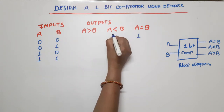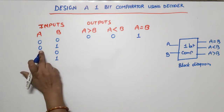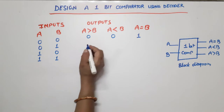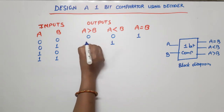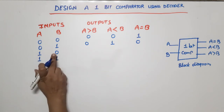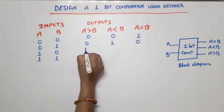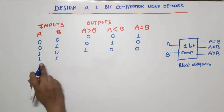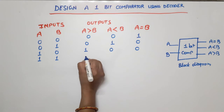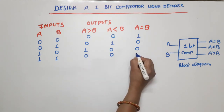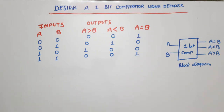When A=0 and B=1, A is less than B, so that output is 1 and the other two are 0. When A=1 and B=1, A is equal to B again, so the equal output is 1 and the others are 0.